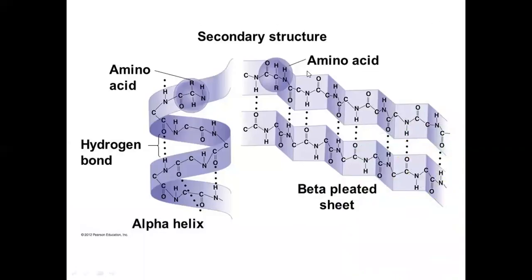The combined secondary structure shows the alpha helical structure, which is right-handed where the coil twists in a clockwise direction, with hydrogen bonds between the hydrogen of the amino group and the oxygen of the carboxyl group. In the beta pleated sheet, two polypeptide chains run next to each other with hydrogen bonds formed between them. If the two chains belong to different proteins it is inter-chain hydrogen bonding; if a single chain is folded it is intra-chain hydrogen bonding. This hydrogen bonding gives stability to the structure.